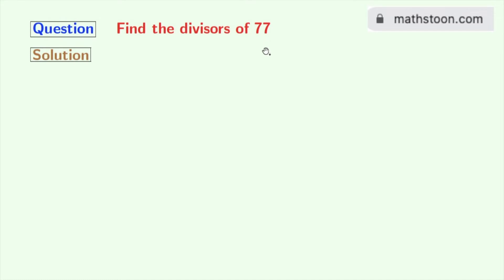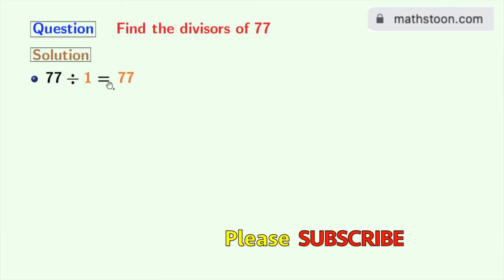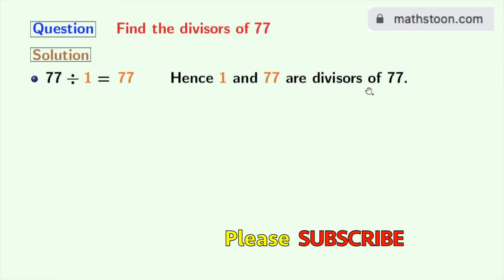We will start dividing from 1. 77 divided by 1 is 77, so 1 and 77 are the divisors of 77. Now the next number which can divide 77 is 7. So 77 divided by 7 is 11.